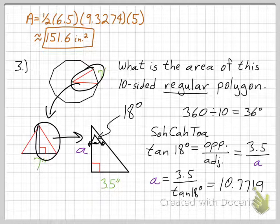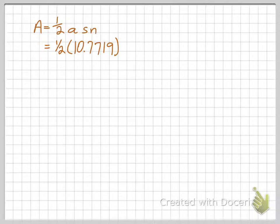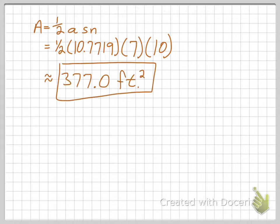I've now used SOHCAHTOA to find my apothem. I can plug that into the formula: area equals one-half times A times S times N. My apothem is 10.7719, my side length was given as 7, and it's a 10-sided figure so N equals 10. Multiplying those all out, you get approximately 377 square feet.